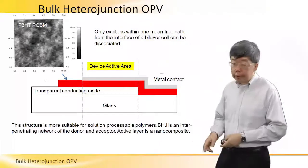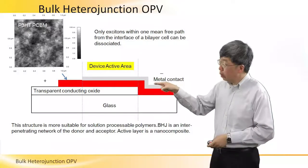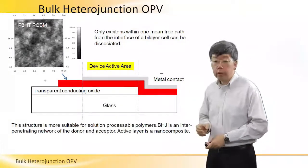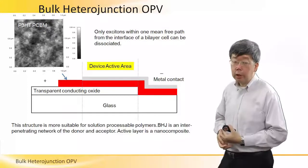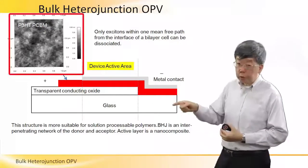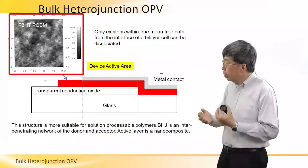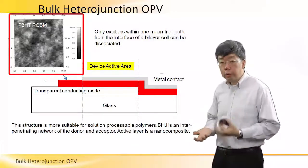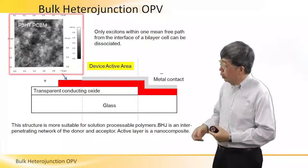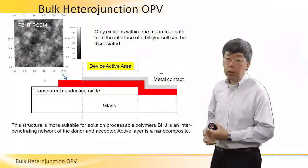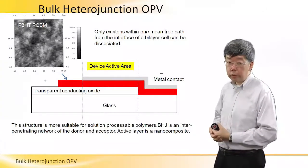We can use a spin coating method or a printing method, and this can be done over a much larger area than possible with the bilayer device structure. Because of this, the active layer — the absorber layer in this structure — is actually what's called a nanocomposite. We have an experimental image of this kind of bulk heterojunction on the top left, which is an atomic force microscope, or AFM, image.